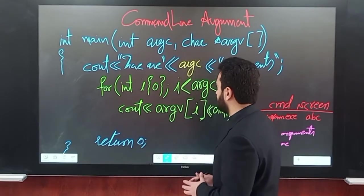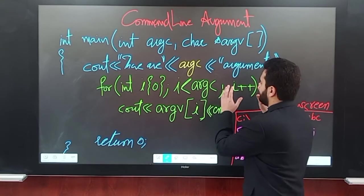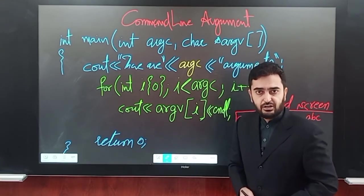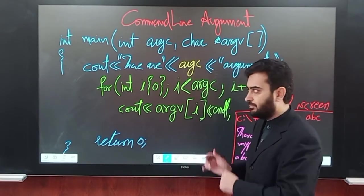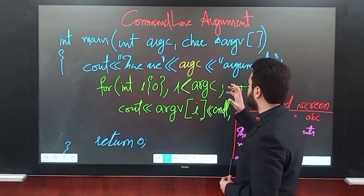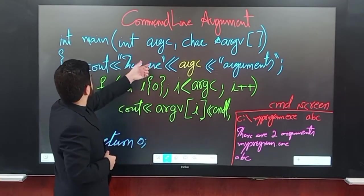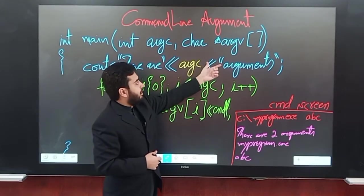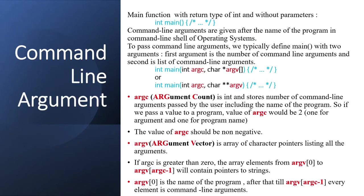When using the full version, this parameter list can be used with the command line execution of our program. Let's see how this program actually works and what argc and argv are in detail. argc is an integer parameter containing a count of the number of arguments passed to the program — it stands for argument count. argc will always be at least one because the first argument is always the name of the program itself. Each command line argument the user provides will cause argc to increase by one.